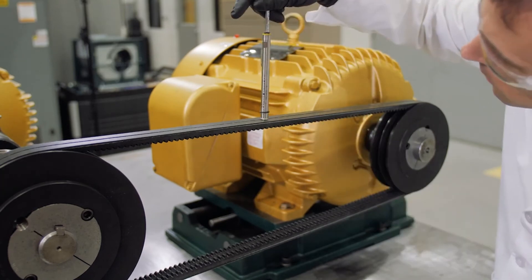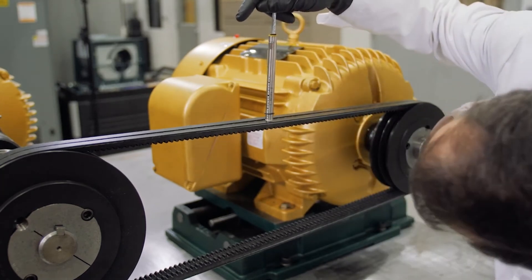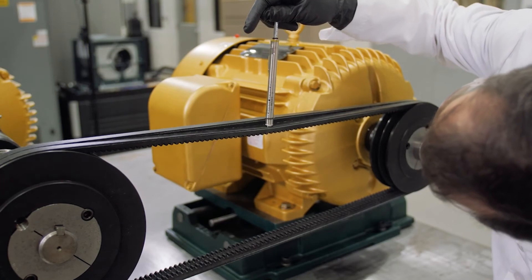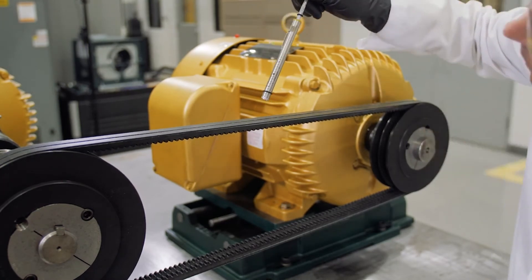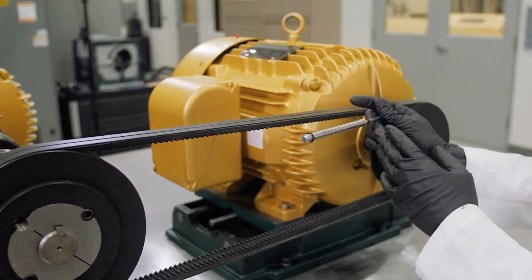For multiple belts, the adjacent belt may be used in place of a straight edge. Remove the tension meter and note the position of the small O-ring, indicating the deflection force applied.